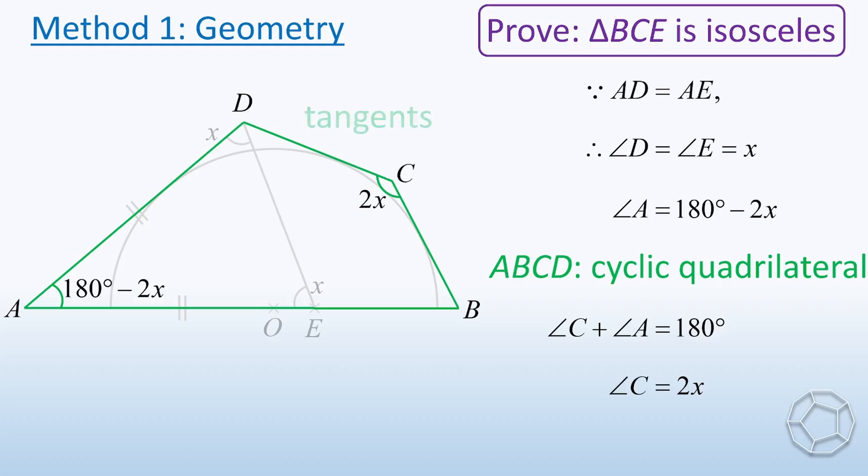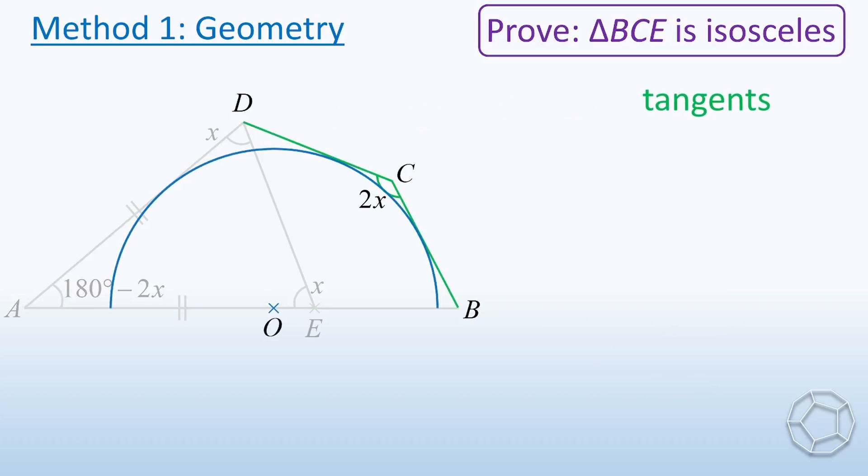How about the condition of tangents? Let's construct the side OC. Because CB and CD are tangents to the semicircle, OC divides angle C into two equal halves. That means both angles at point C equal X. At this moment, can you see something special?